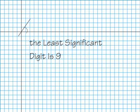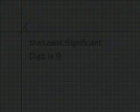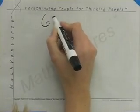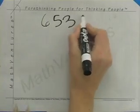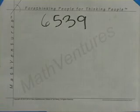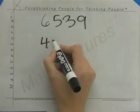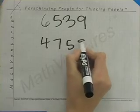Here we'll show subtraction without borrowing. We'll start with the number we want to subtract from, like 6,539, and subtract from it 4,758.